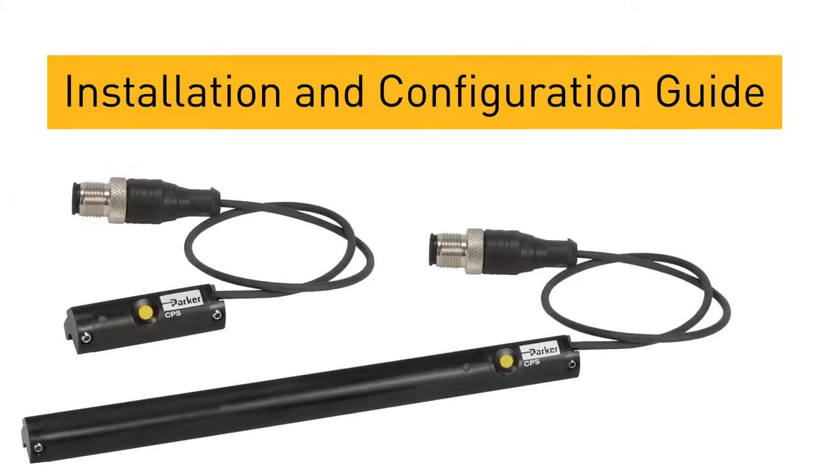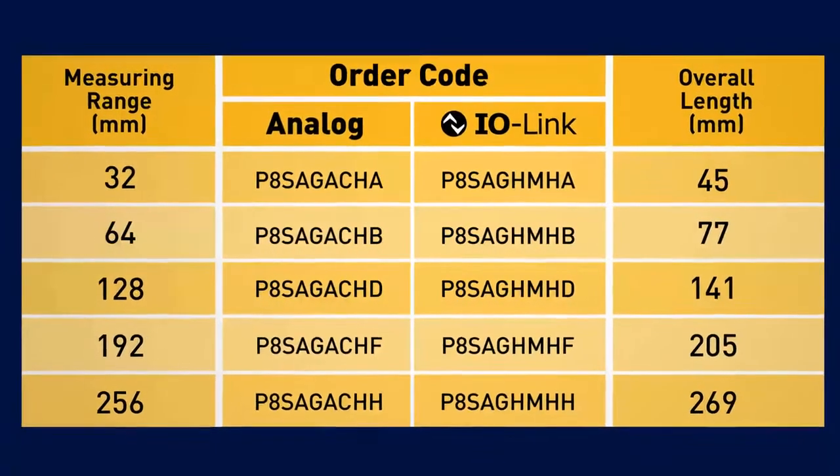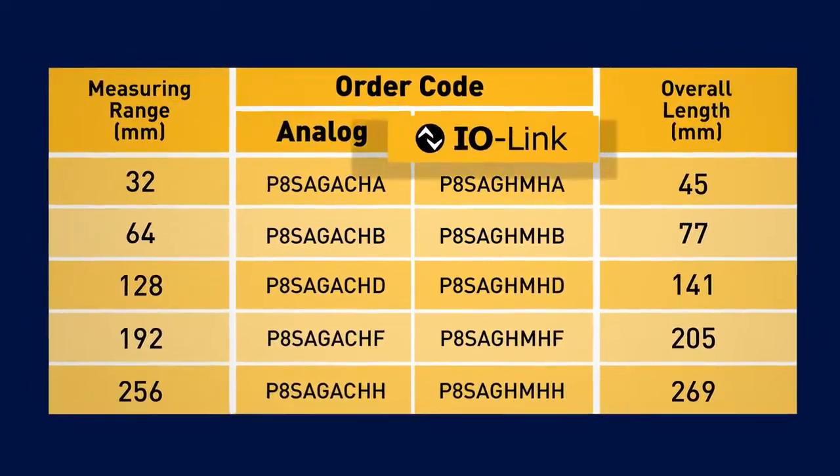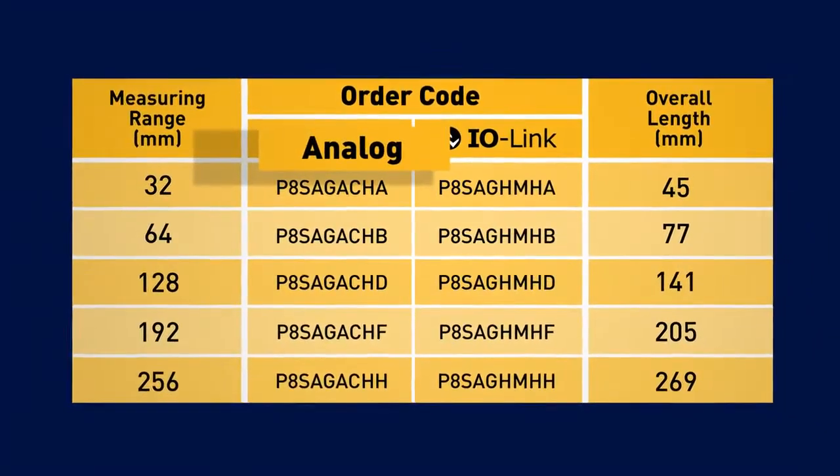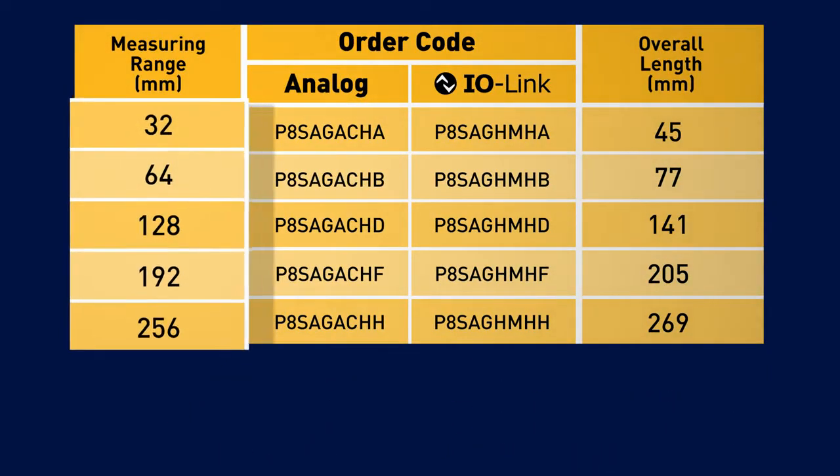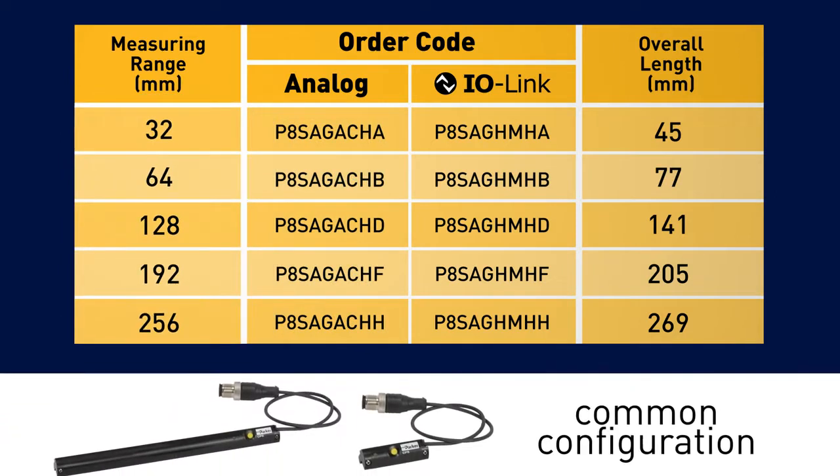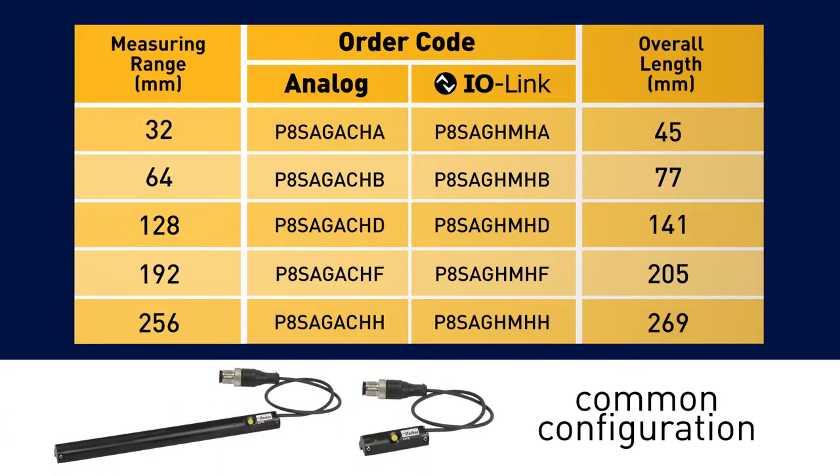Installation and configuration guide for Parker's CPS continuous position sensor onto a pneumatic actuator. Parker's CPS is available with either an IO link feedback signal or analog with both 0 to 10 volt and 4 to 20 milliamp output. There are five measuring ranges available up to 256 millimeters. The installation and configuration is common for all configurations.